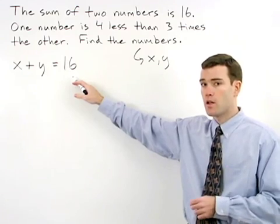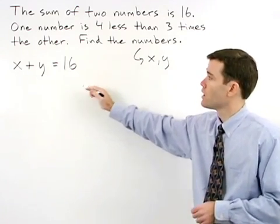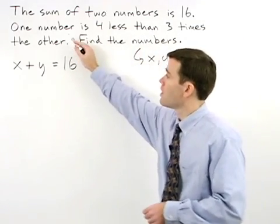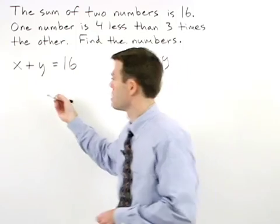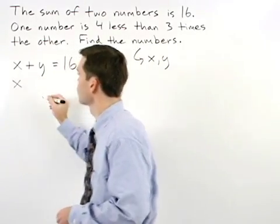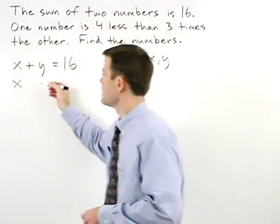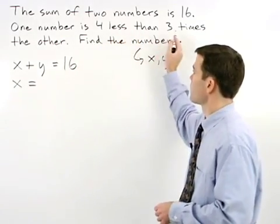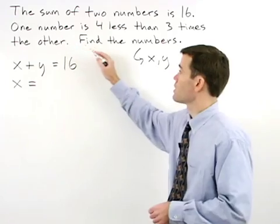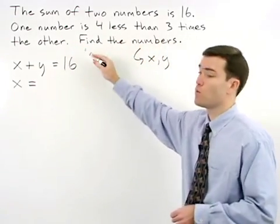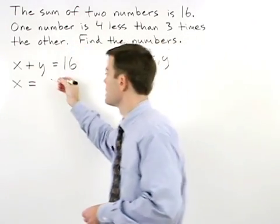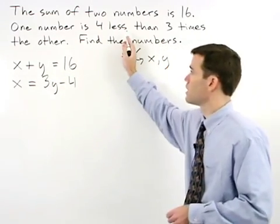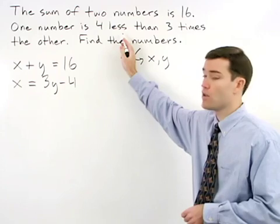So to set up our second equation, let's read through the second sentence in the problem. One number, that's x, equals — and remember, 4 less than 3 times the other does not mean 4 minus 3y. It means 3y minus 4. Remember, less than switches the order around.